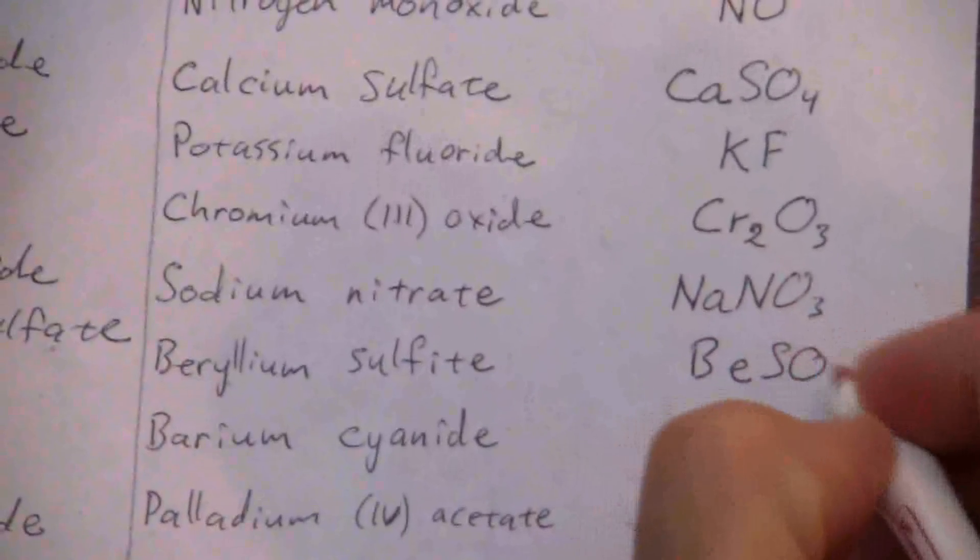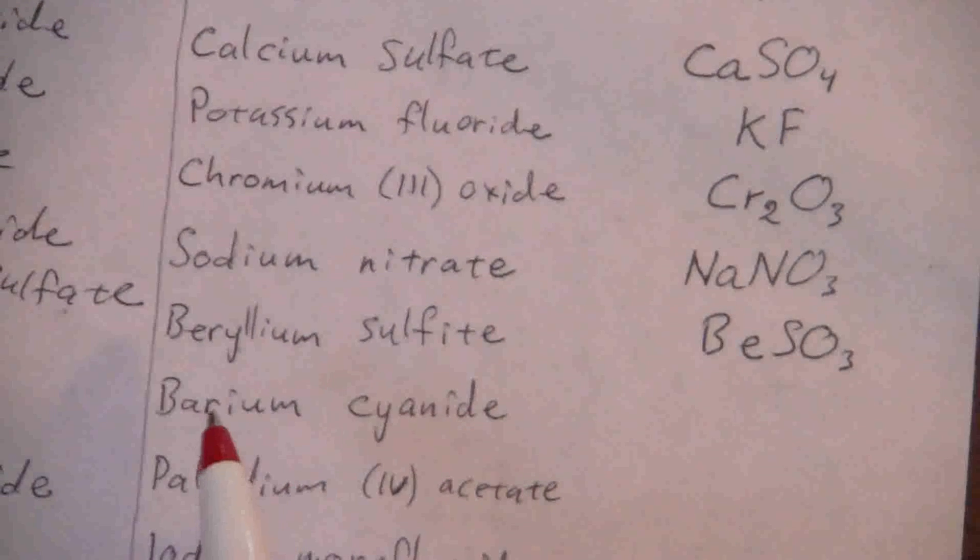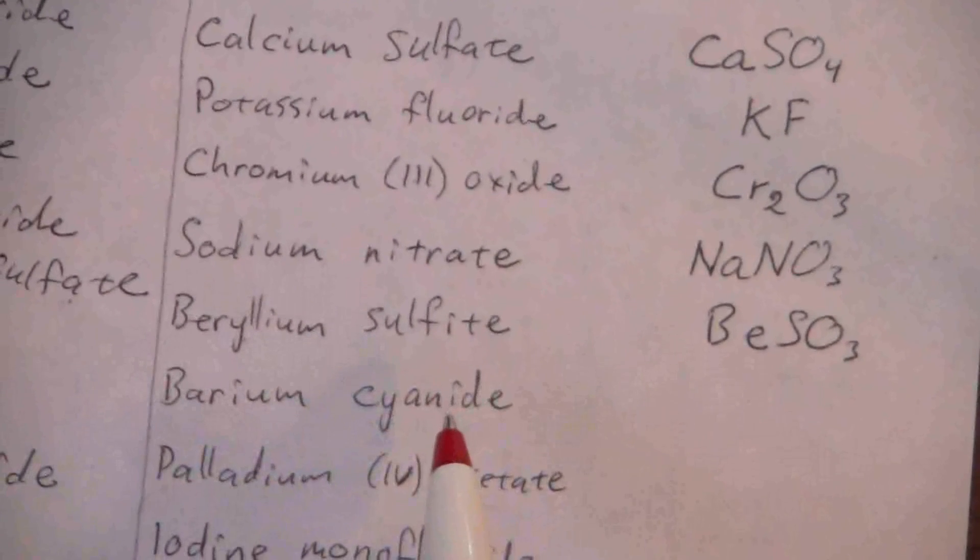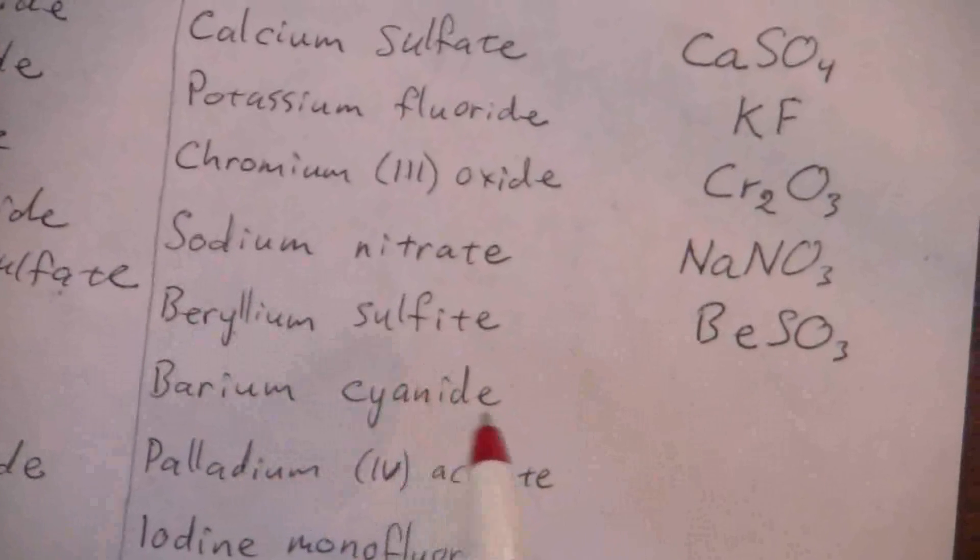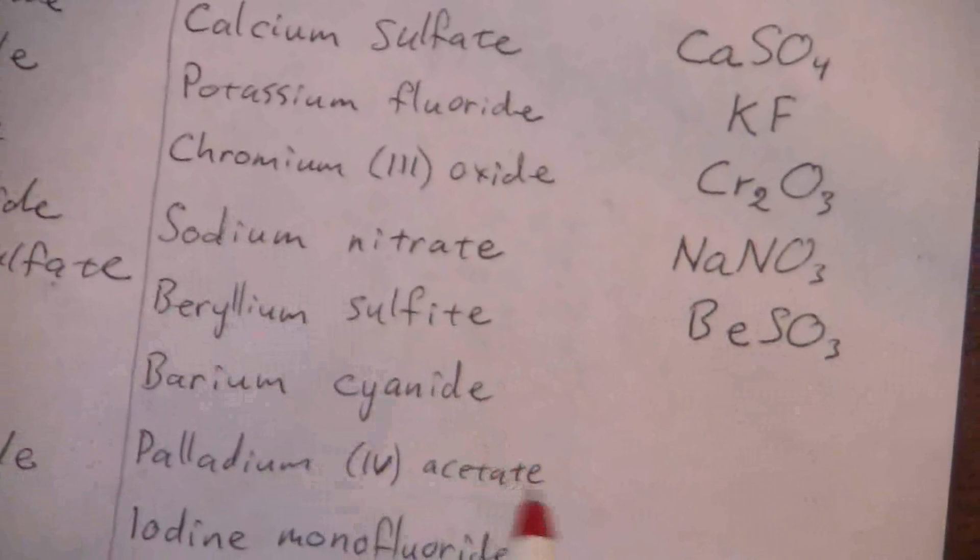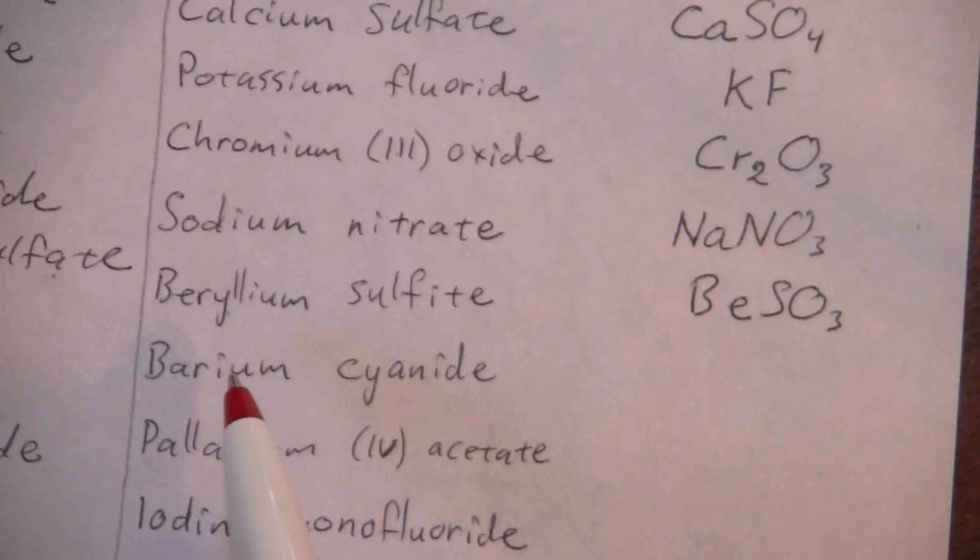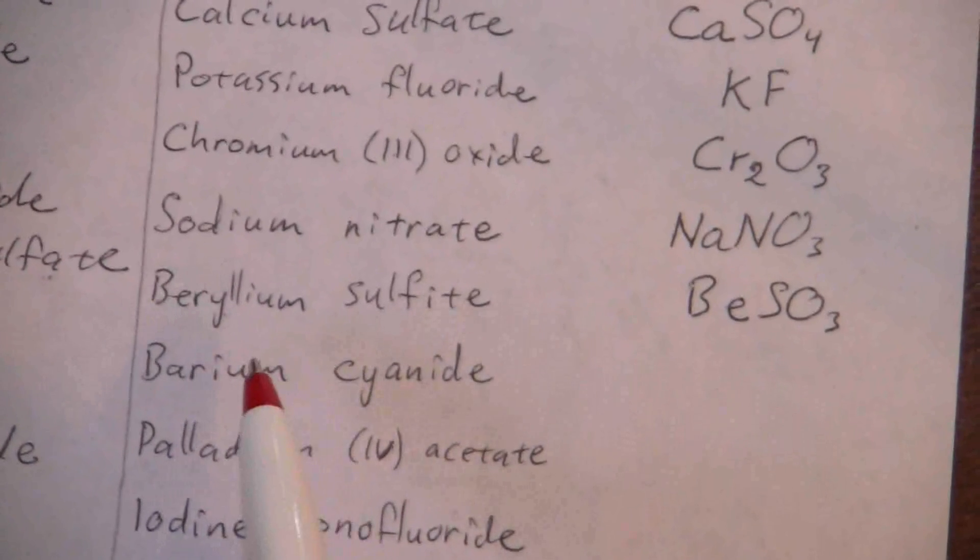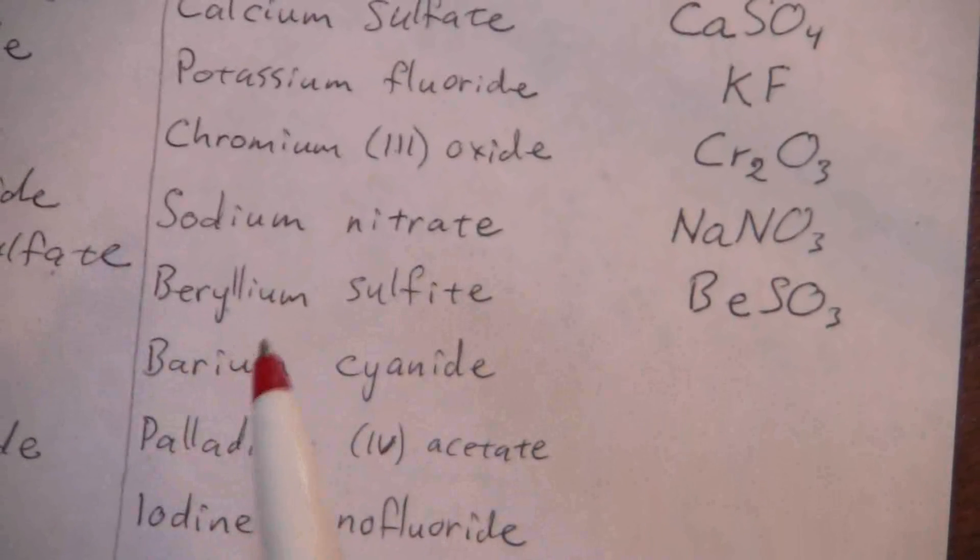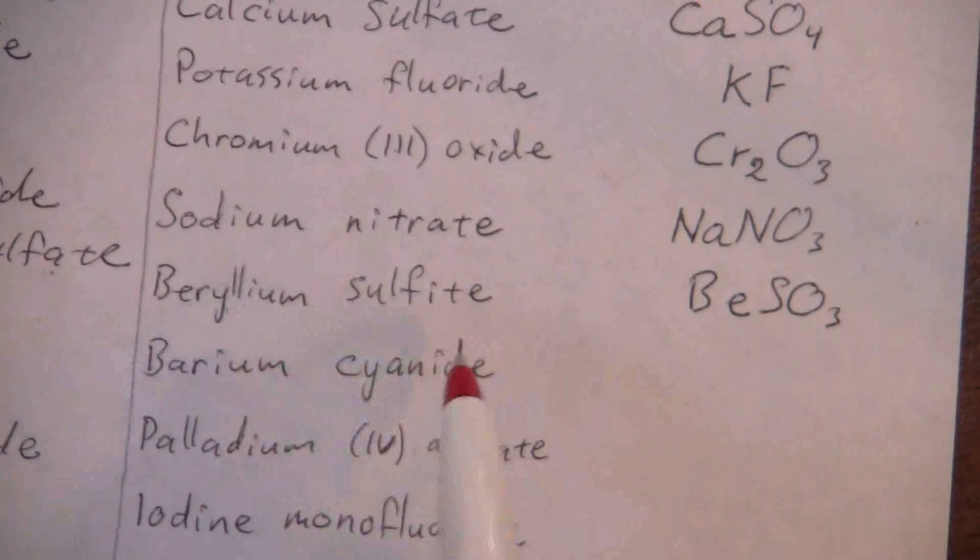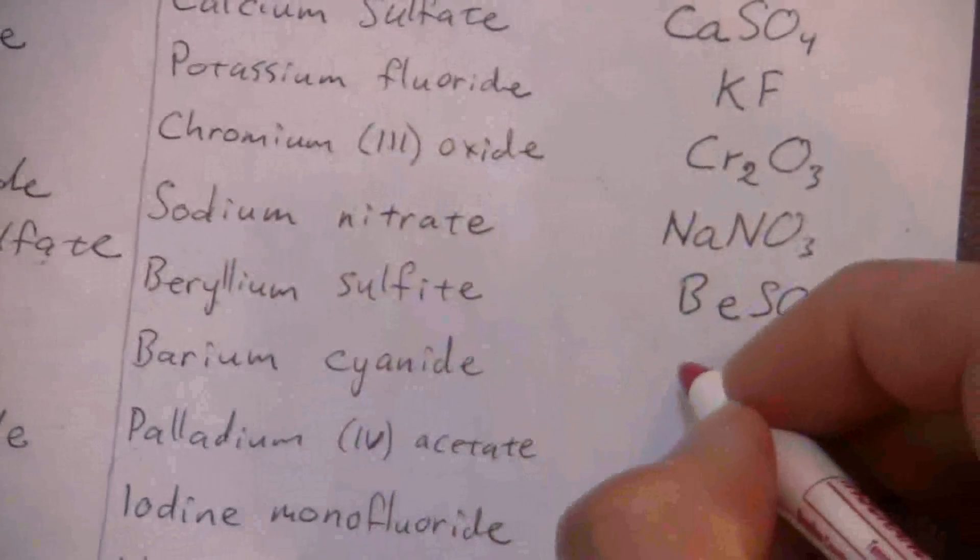Now we have barium cyanide. Cyanide is CN and barium is also in that same group a little further down, so it has a positive two. Cyanide has a negative one, so I need two cyanides.